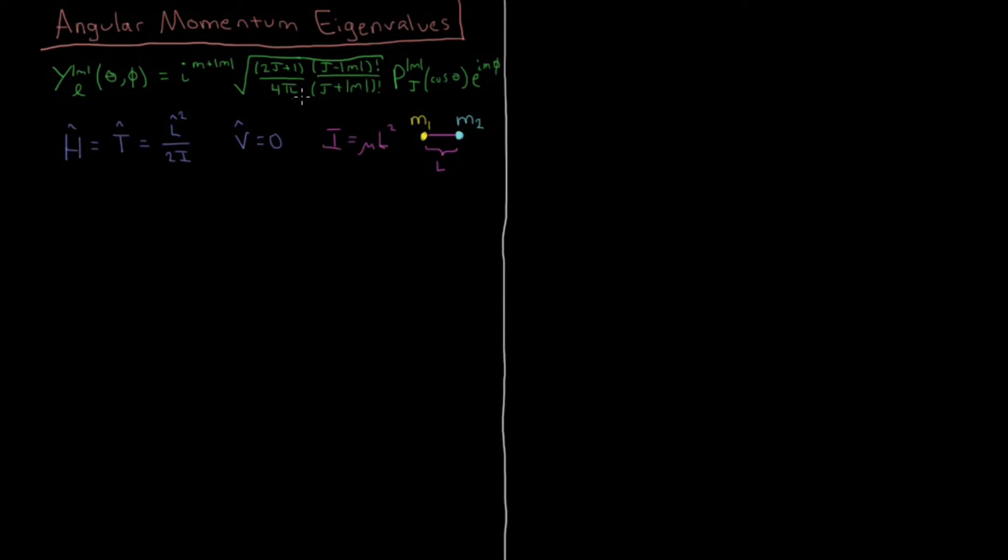We have two quantum numbers, j and m. Sometimes you might see j as l, j and l are the same thing, as a function of this theta and phi, the polar and azimuthal angle in spherical polar coordinates.